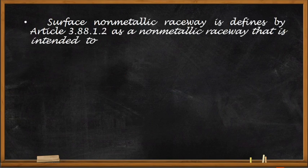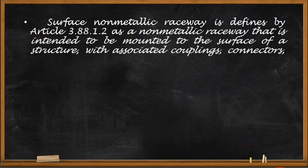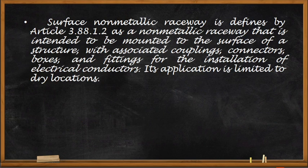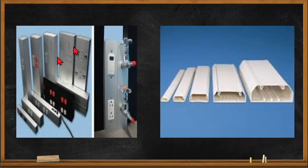The surface non-metallic raceway is defined by Article 3.88.1.2 as a non-metallic raceway intended to be mounted to the surface of a structure, with associated couplings, connectors, boxes, and fittings for the installation of electrical conductors. Its application is limited to dry locations only. The surface metallic raceway is for dry and hazardous locations, while the surface non-metallic raceway is only for dry locations.